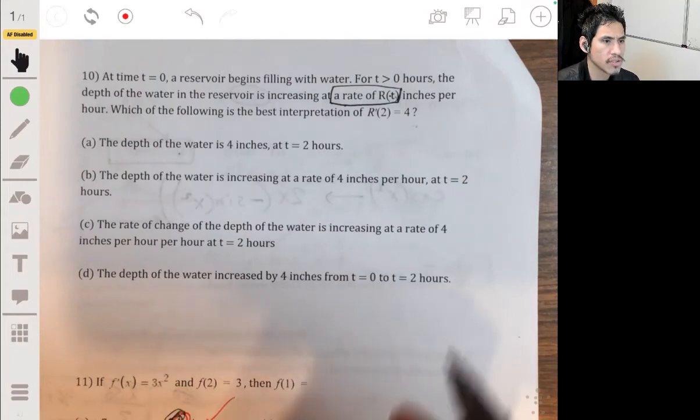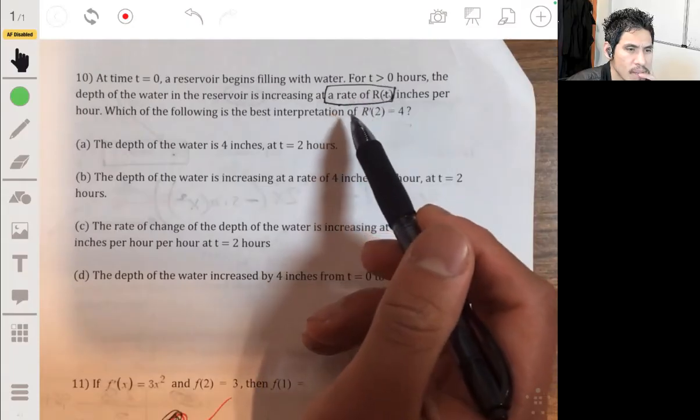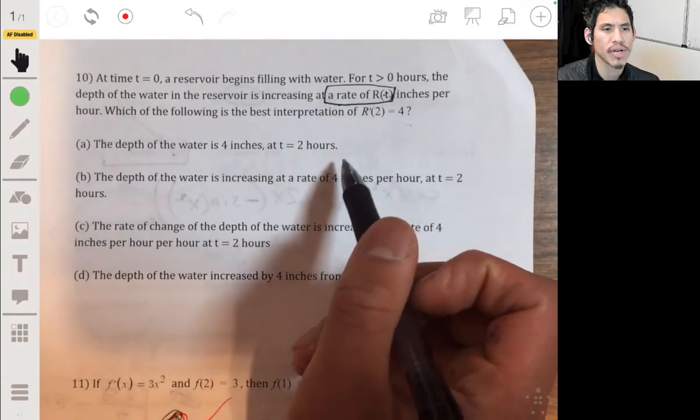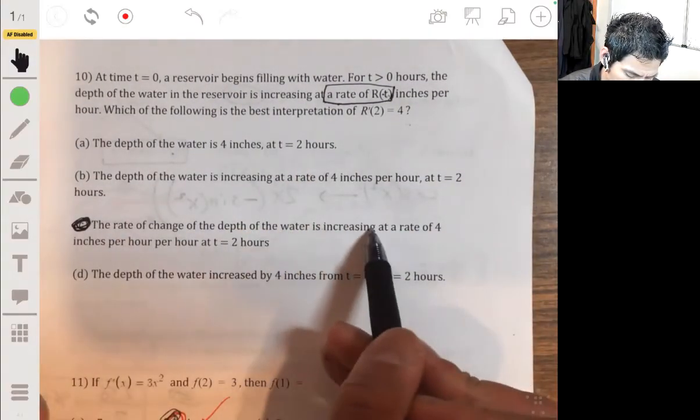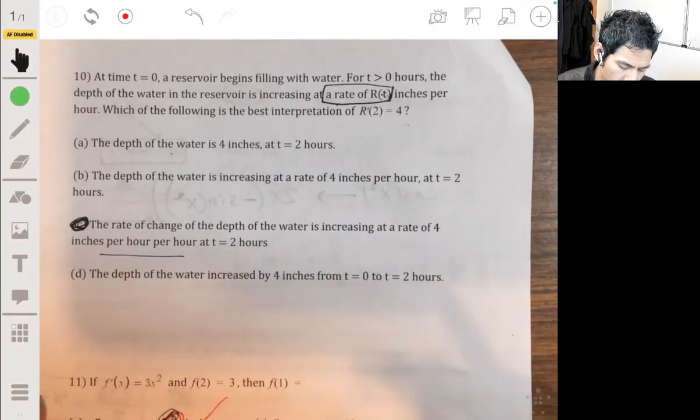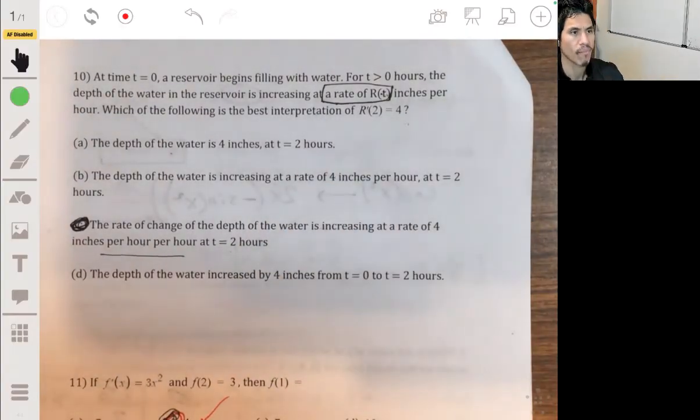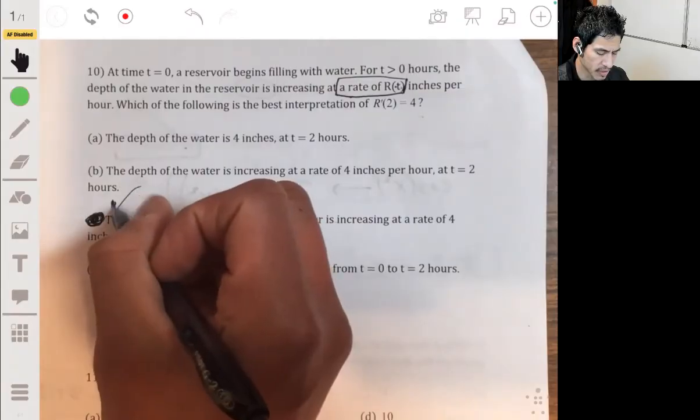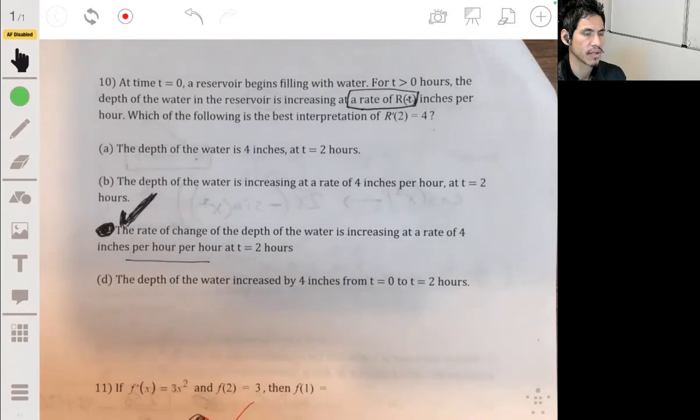There's usually always going to be a problem like this. Not too many, but just be aware of that. Like this one says, increasing at a rate of 4 inches per hour per hour, that sort of thing, because you have the rate of the rate. Otherwise, just don't overthink these, because this is really just in a way kind of a language thing.